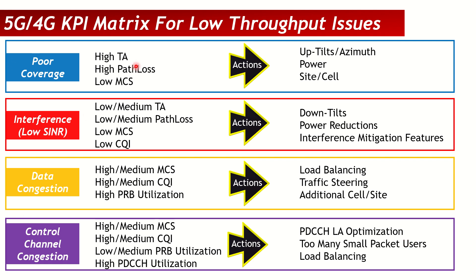This overview shows, step by step, how to identify each scenario using counters and KPIs, and what actions to take to resolve each issue. There is one more throughput problem related to backhaul congestion, application-level issues, core network issues, or server-level issues. The next video will cover how to identify throughput issues not related to RAN using KPIs. Thank you and have a nice day.